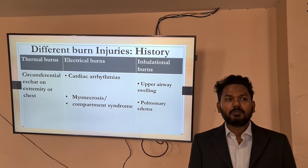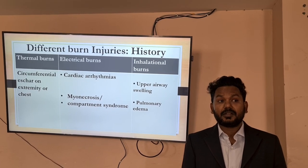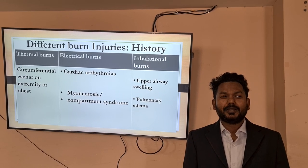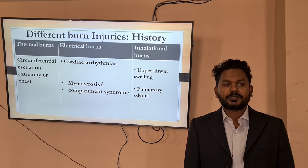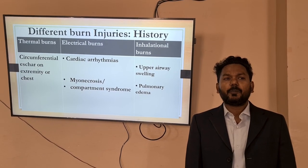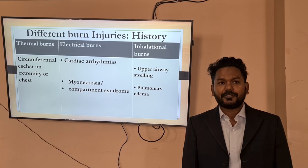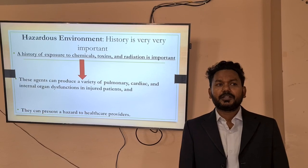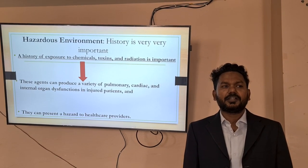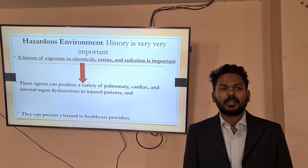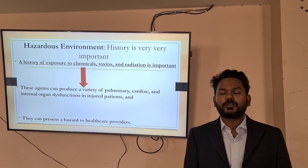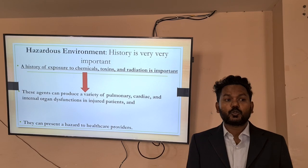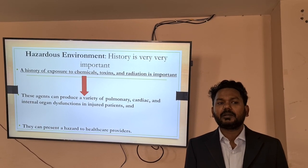In different burn injuries: in thermal burns one can expect circumferential scarring on extremities or chest; in electrical burns the patient usually has cardiac arrhythmia, myonecrosis or compartment syndrome; and a patient with inhalational burns has features of upper airway swelling or pulmonary edema. Whenever there is suspicion of hazardous environmental exposure, take a history of exposure to chemicals, toxins, and radiation, as these agents can produce a variety of pulmonary, cardiac, and internal organ dysfunction and also present as hazards to healthcare providers.